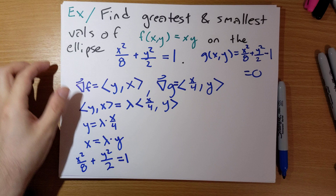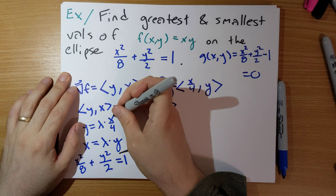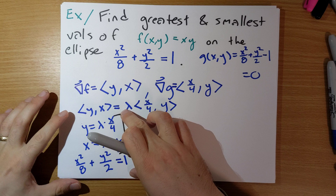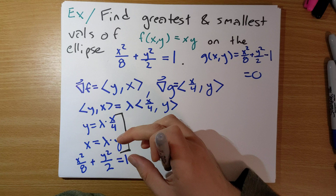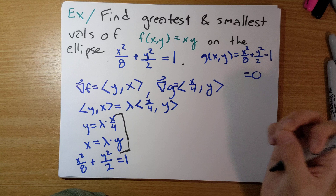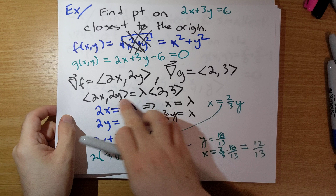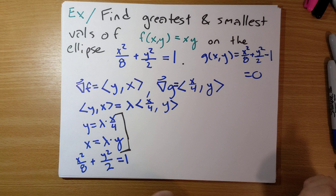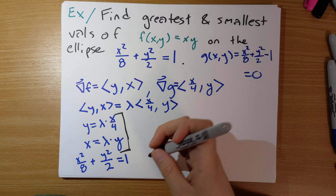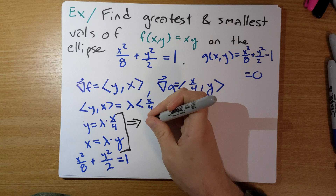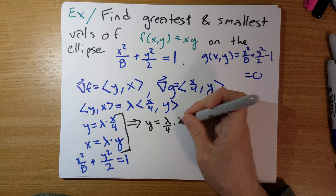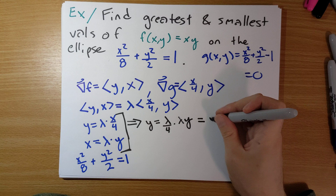Don't forget we still have our constraint: x squared over 8 plus y squared over 2 equals 1. We need to solve all three equations, but we start by looking at the first two equations to get rid of lambda. From x equals lambda times y and y equals lambda over 4 times x, substituting gives y equals lambda squared over 4 times y.